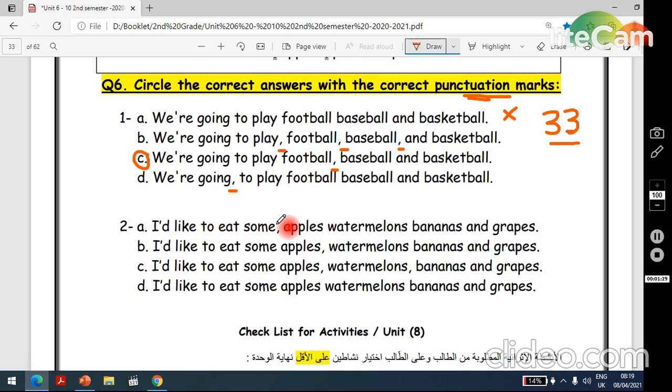Okay, now two. I'd like to eat some apples, watermelons, bananas, and grapes. Look, here we have a comma after some, so it's incorrect. What about B? I'd like to eat some apples. Okay, here we have a comma, it's correct. Watermelons, we don't have a comma here, so it's incorrect. What about C? I'd like to eat some apples, watermelons, bananas, and grapes. Yes, the correct answer is C. What about D? I'd like to eat some apples, watermelons, bananas, and grapes. We don't have here any commas, so it's incorrect. Thank you for watching this video. Bye bye.